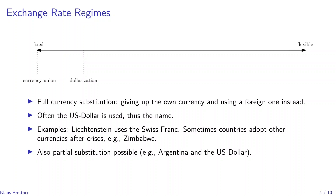Partial substitution is also possible, which is a somewhat less extreme case, where the home currency is still in circulation as legal tender but a foreign currency is also used. For example, this was the case in Argentina when they used the US dollar and tied the peso to it in the 1990s, which helped them bring inflation down. But in the long run, it led to a sovereign debt crisis in Argentina.